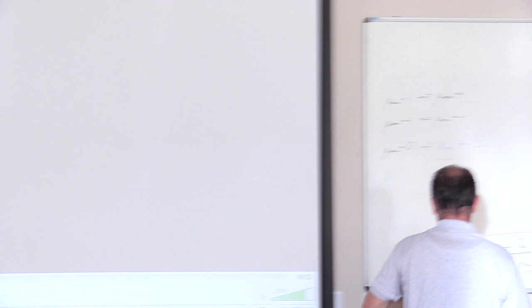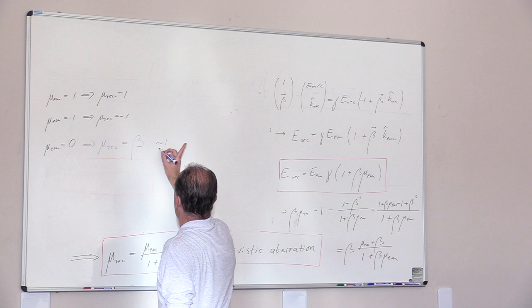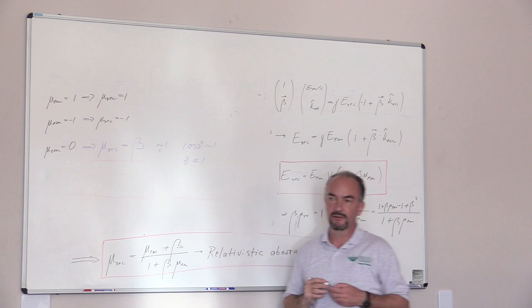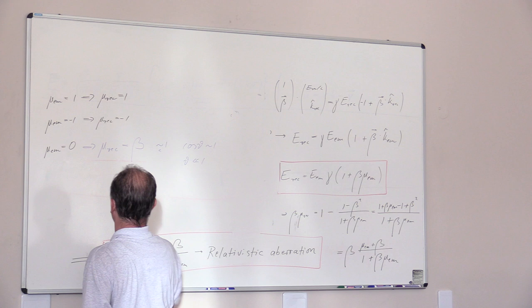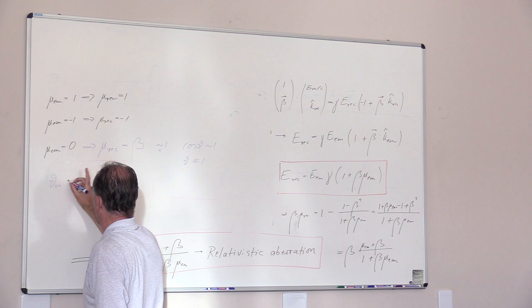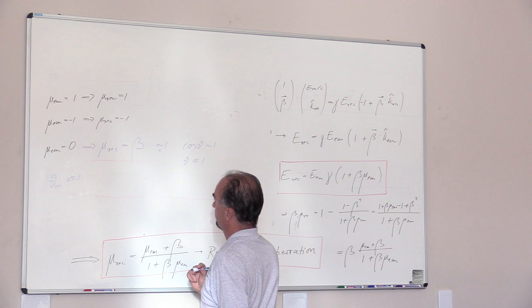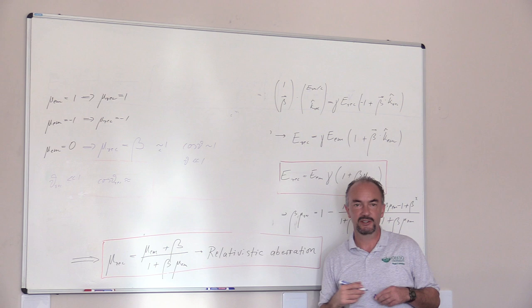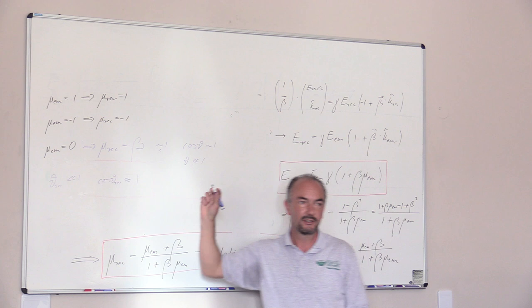Now, if we make the assumption here, so if β is almost 1, just a little bit less than 1, that also means that cosine θ is almost 1. So θ must be a very small angle. So if we have a very small angle for θ in the receiver's frame, then what is cosine θ to first order? What is the lowest order Taylor expansion of the cosine? 1, and cosine 0 is 1, minus θ squared over 2.